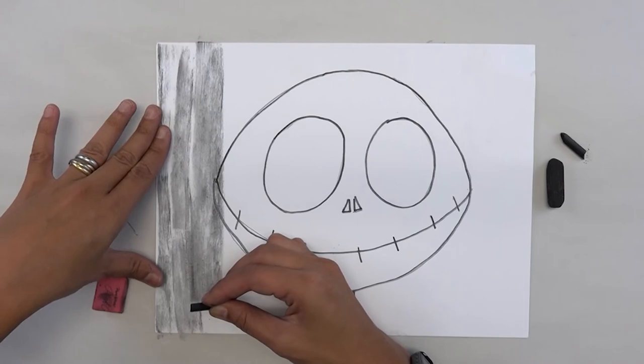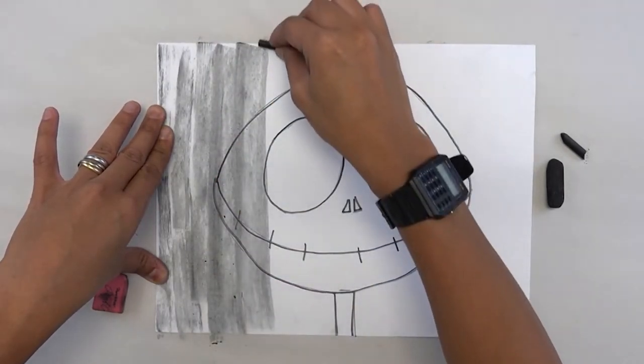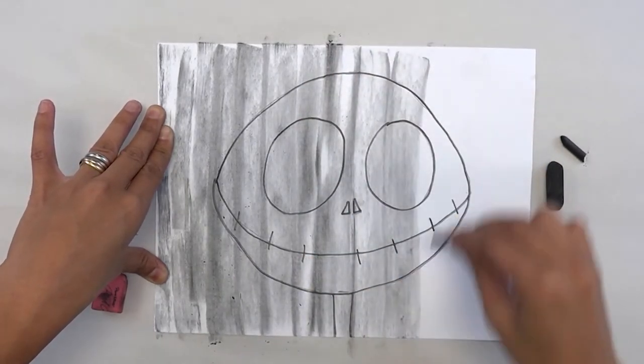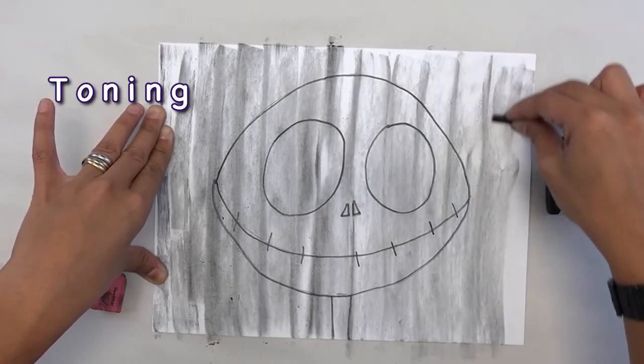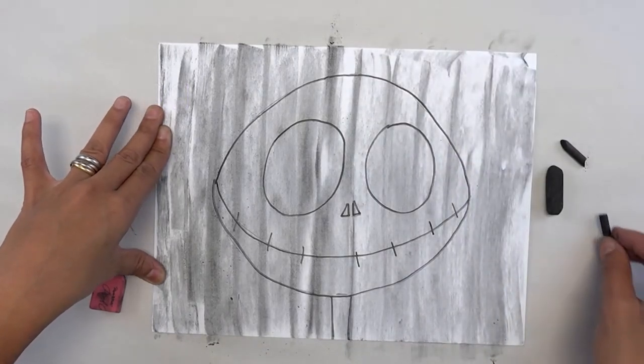We're going to take the side and we're going to cover. I'm holding onto the paper here. We're going to actually just cover the whole thing. And it's going to be a little bit odd looking. So we're just covering it up. And this is called toning your paper. We're putting a tone of gray onto your paper.